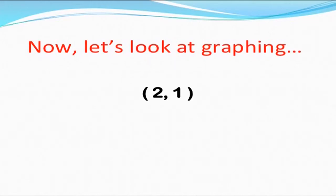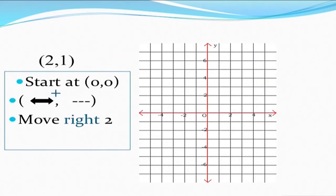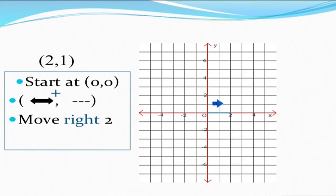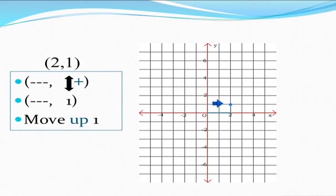Now let us look at graphing a point whose coordinates are represented by the ordered pair (2, 1). We start from the origin, whose coordinates are (0, 0). In the ordered pair (2, 1), 2 is to be represented with the help of the x-axis, so we move towards the right of the origin on the horizontal axis by two points. Then 1 is to be represented with the help of the vertical axis, so we move up one point from the origin. The point is represented by the intersection of the line raised vertically from point 2 on the horizontal axis and the line drawn horizontally from point 1 on the vertical axis.